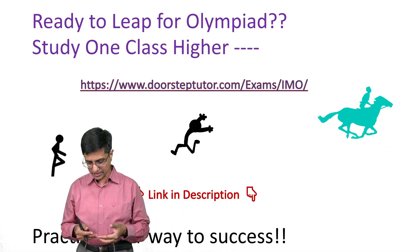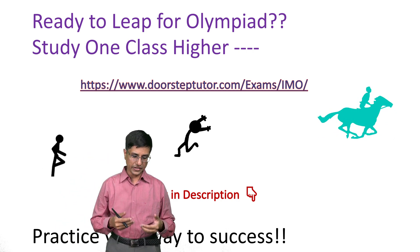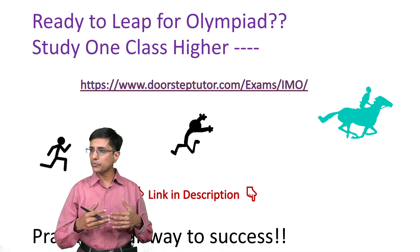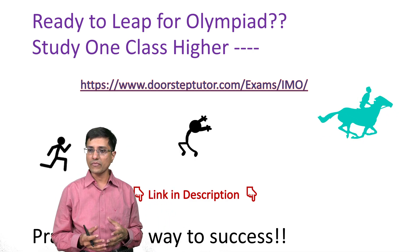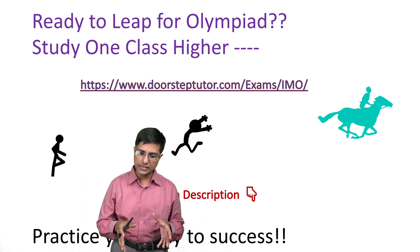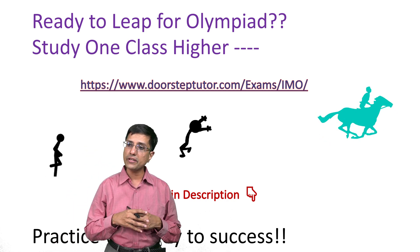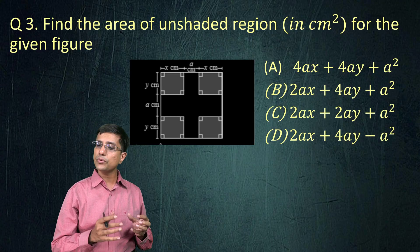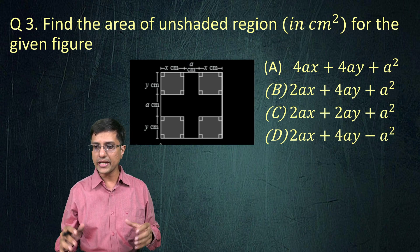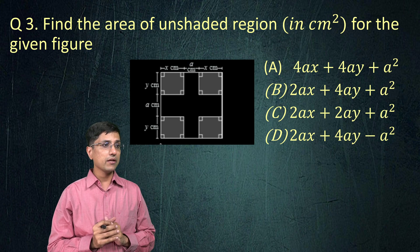The key things we have seen so far: you should know factorization, you should know tables, and you should know squares and cubes of numbers. To memorize these by writing them down is slightly difficult. But if you are solving a number of problems, these things will come to you automatically and naturally.